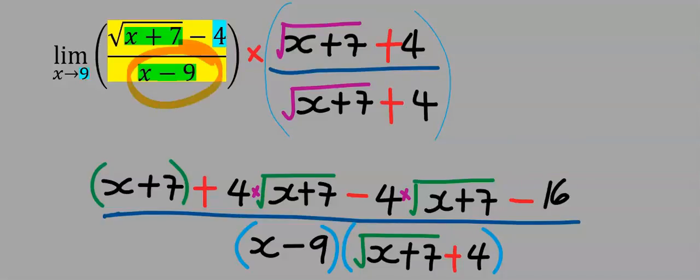Next, minus 4 multiply plus 4, and we're going to have minus 16. Next at the denominator, x minus 9 we multiply everything on this side and bring them together. Next, 4 multiply the square root of x plus 7 will cancel out minus 4 multiply square root of x plus 7.